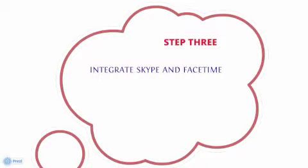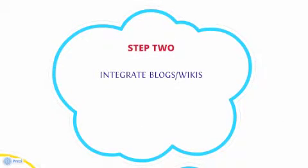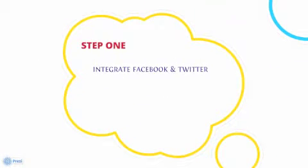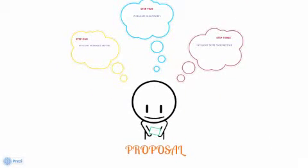I really feel that implementing all of these things into the English 250 online course would definitely improve how students feel about this class. I think overall this is a great class and there really don't need to be any more changes than what's necessary, but implementing these two basic things — social network websites and video conferencing — would make a difference in getting students excited about taking these types of classes.